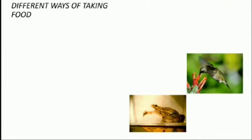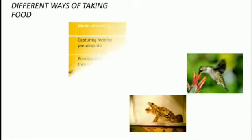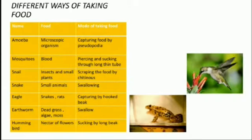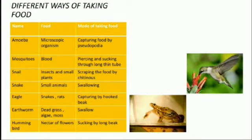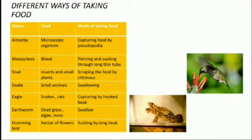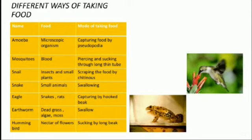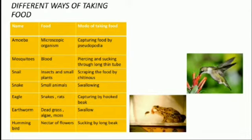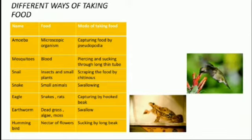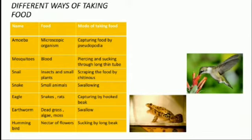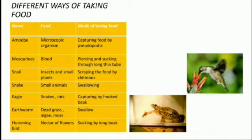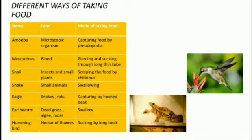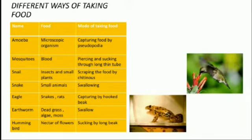Now let us come to the different ways of taking food. Different animals have different modes of taking food. An amoeba takes microscopic organisms and captures food by means of false feet known as pseudopodia. Mosquitoes suck blood by piercing and sucking through a thin tube. A snail takes insects and small plants by scraping the food. Snakes swallow the whole animal. Eagles take snakes and rats, capturing food through their hooked beak.